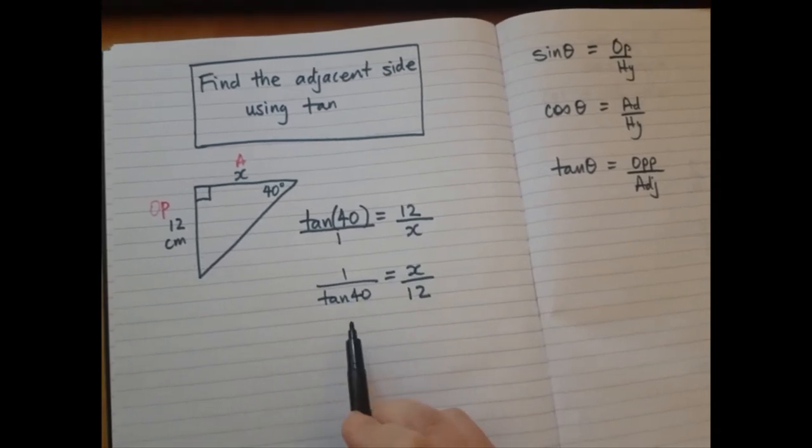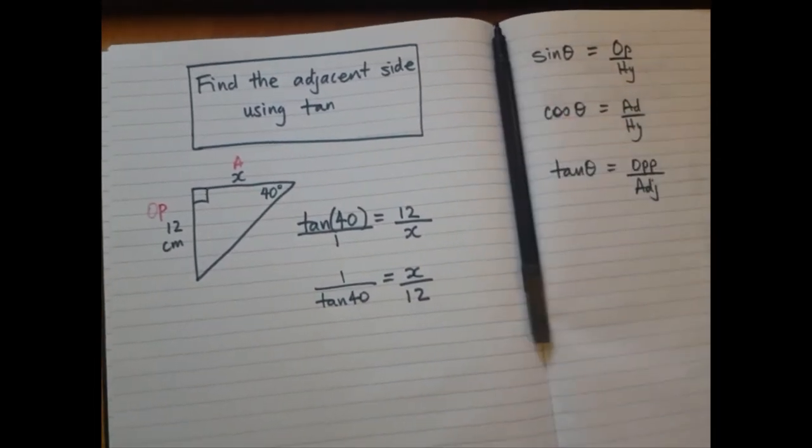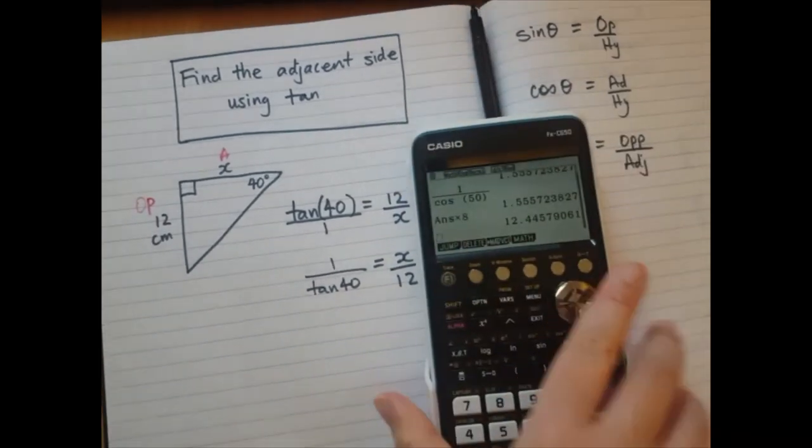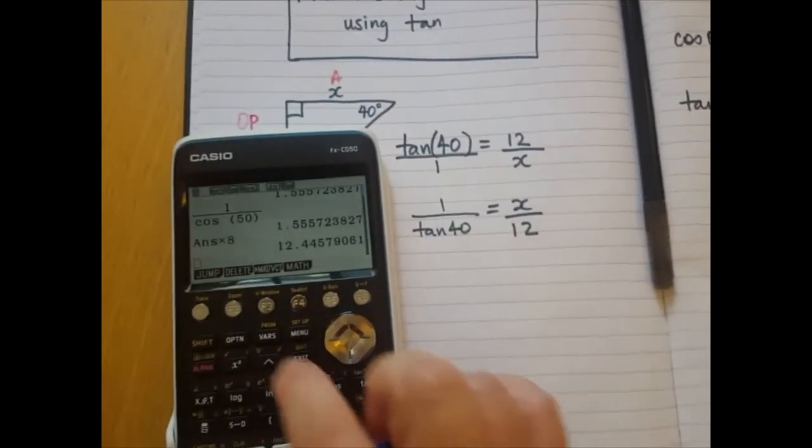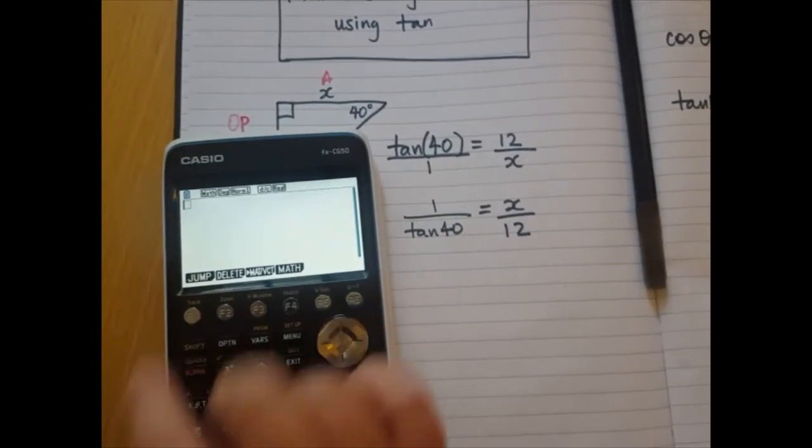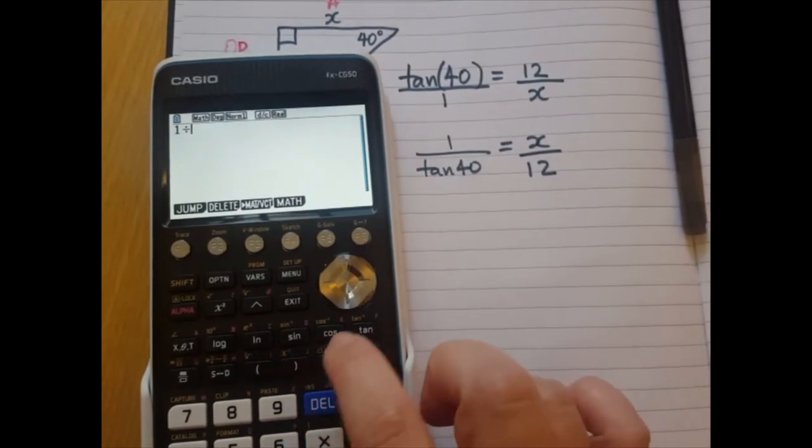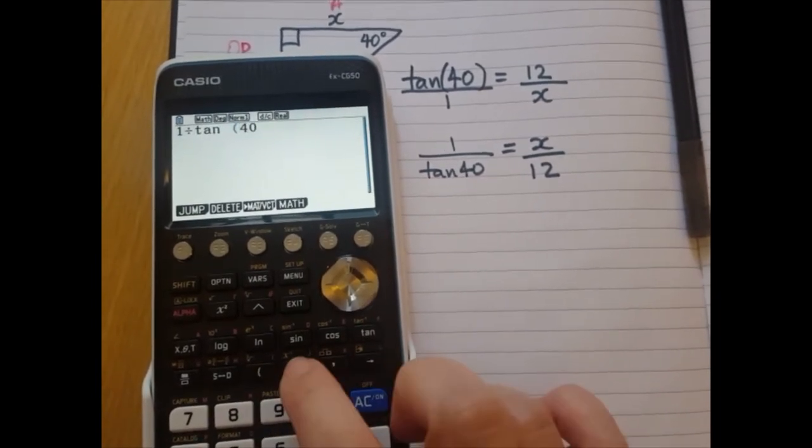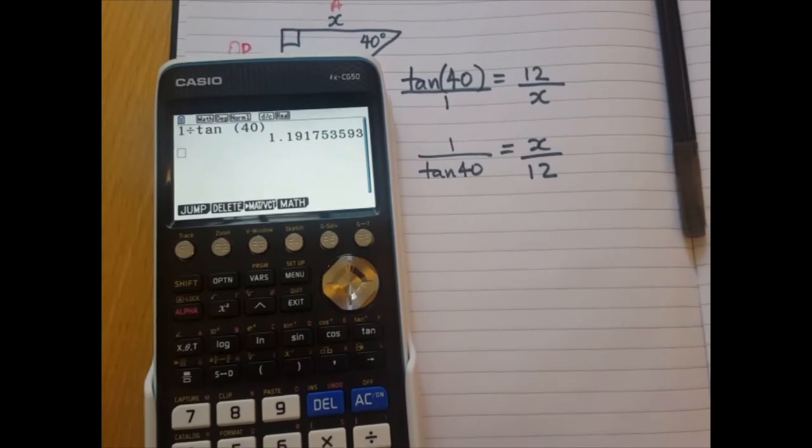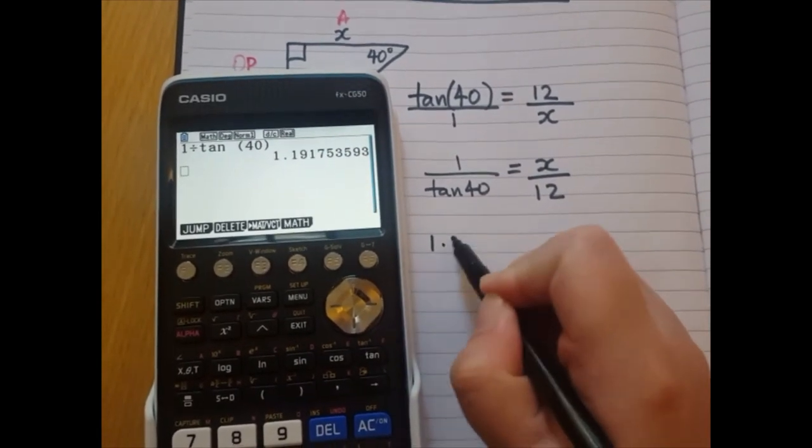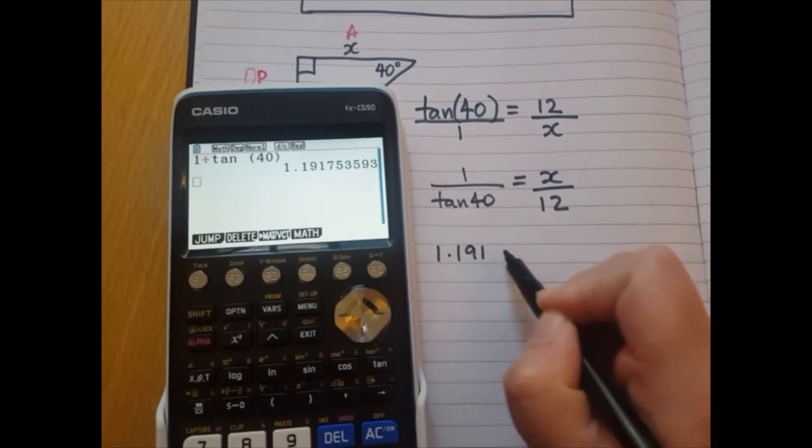I'm going to work out what's 1 over tan 40 on my calculator. So 1 divided by tan 40, and I'm going to write down that decimal number now, 1.19175.